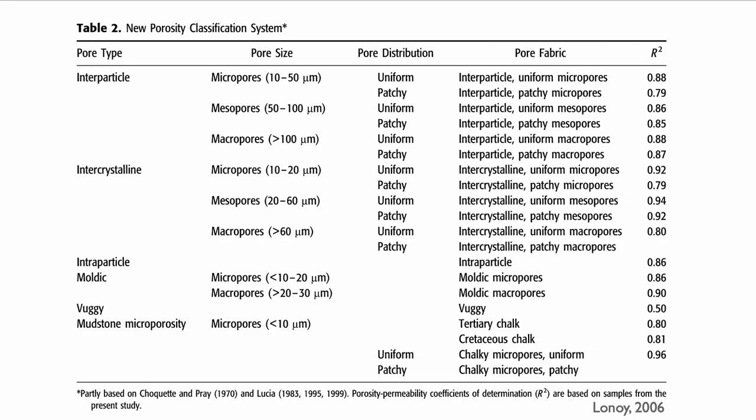A micropore in interparticle porosity, for instance, is 10 to 50 microns, but a micropore in intercrystalline porosity is 10 to 20 microns, despite both being called micropores. The reason these cutoffs are here is because they are empirical — they're here to maximize the ability to predict permeability based on porosity.